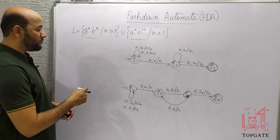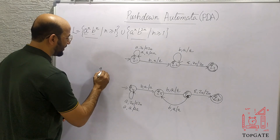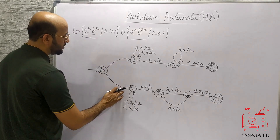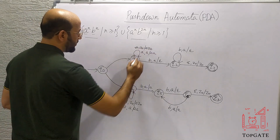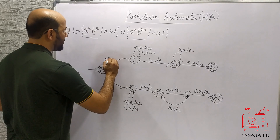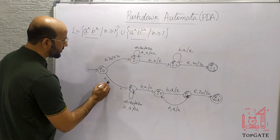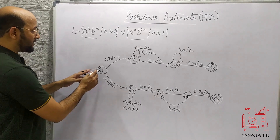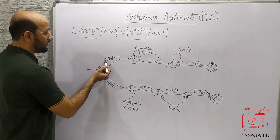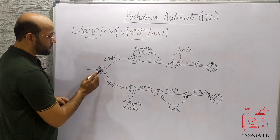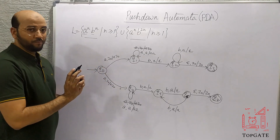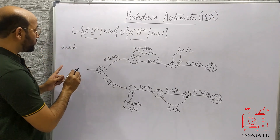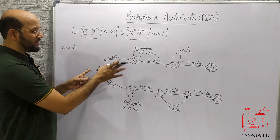Now for the union operation: I will simply take a new initial state Q0 and join it to Q1 and Q4. I will remove the initial transitions from Q1 and Q4 and place them at Q0 — that is a comma Z0 slash a Z0 going to Q1, and a comma Z0 slash a Z0 going to Q4. So at Q0 we have two moves for a: topmost element is Z0, and we can either go to Q1 or go to Q4.